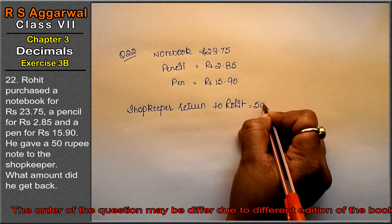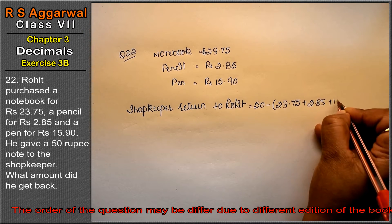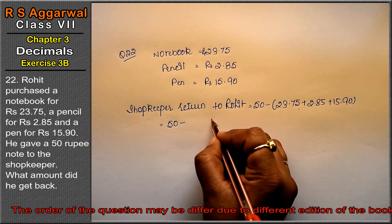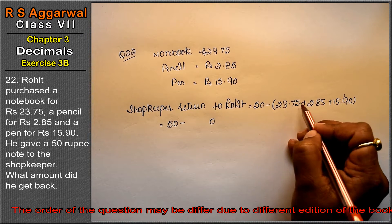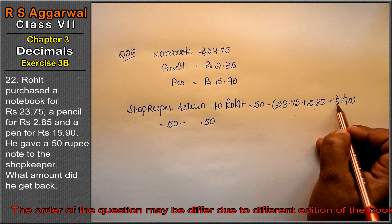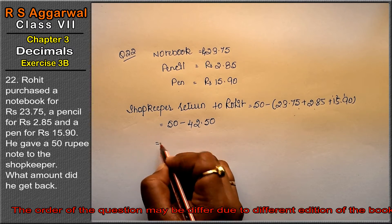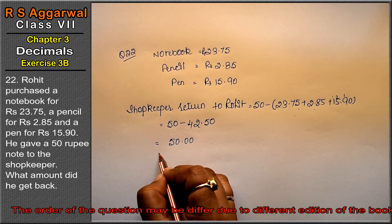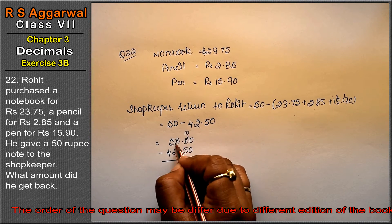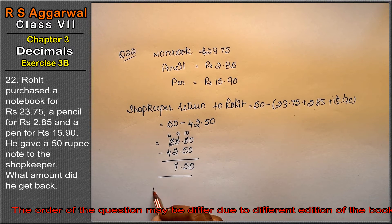50 rupees minus 23.75 plus 2.85 plus 15.90. How much came? 50 minus. Now see, 5 and 5 is 10, carry 1. 10, 18, 19, 20, 21, 22, 23, 24, 25. 25 and 2 carry. Point. 7, 8, 9, 10, 11, 12, carry 1, 2 and 2 is 4. In rough work we are showing, 50.00 minus. 0, here carry 1, 10, this came 9 and this remained 4. 10 minus 5 is 5 point, 9 minus 2 is 7. That means shopkeeper